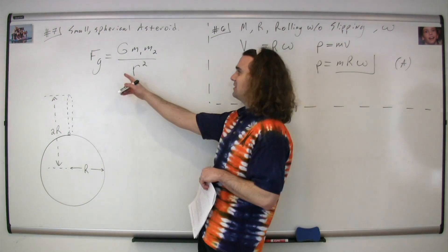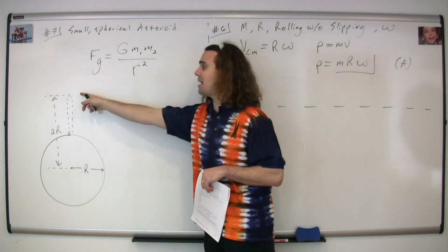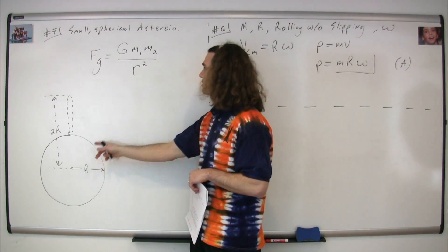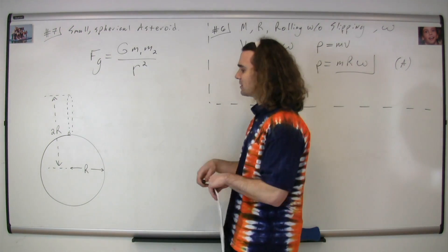The force of gravity is equal to big G, Newton's Universal Gravitational constant, times the mass of one object, times the mass of the other object, divided by r squared, where r is the distance between the center of masses of the two objects.